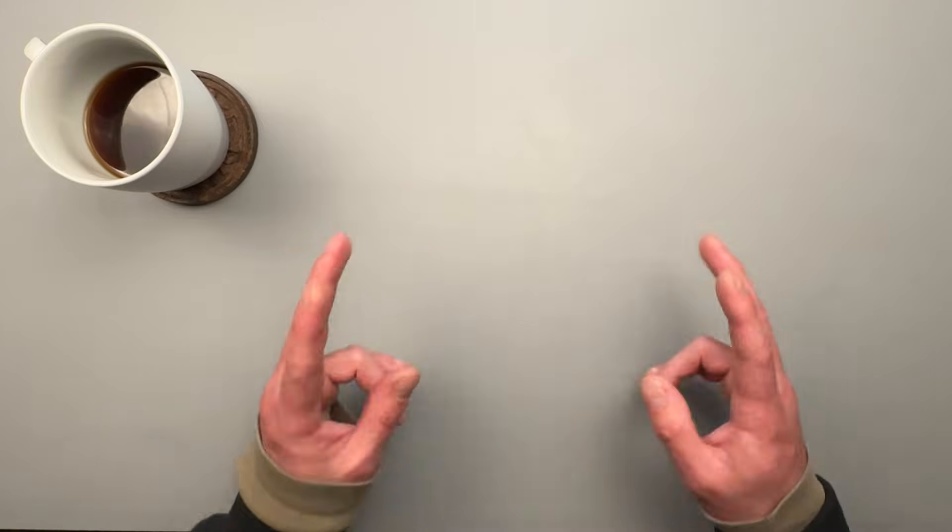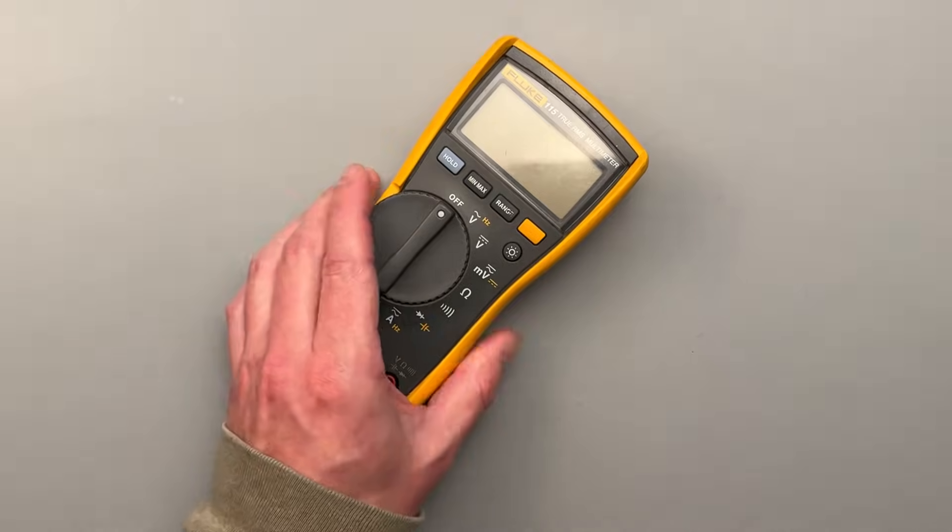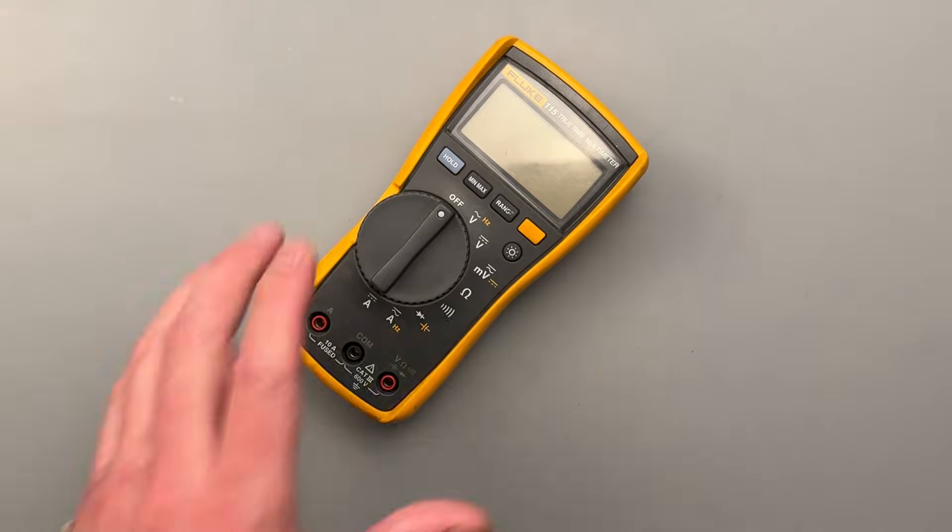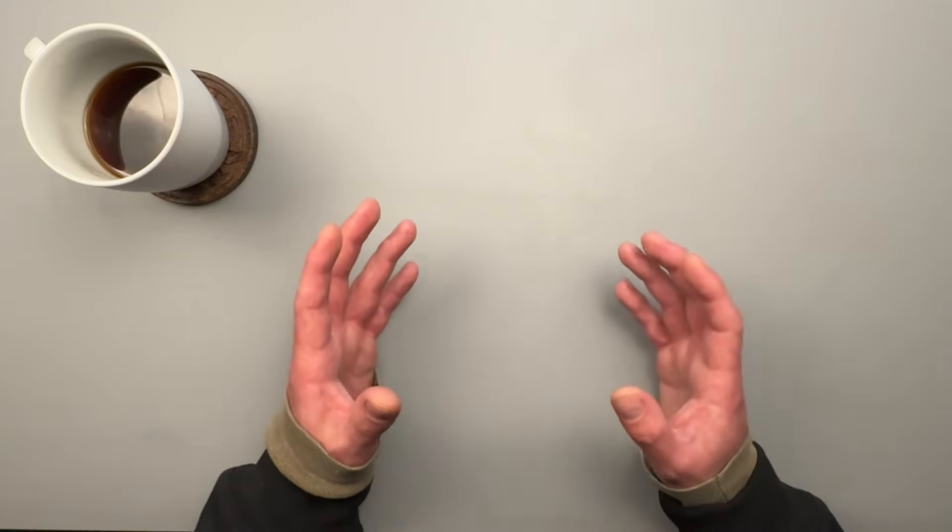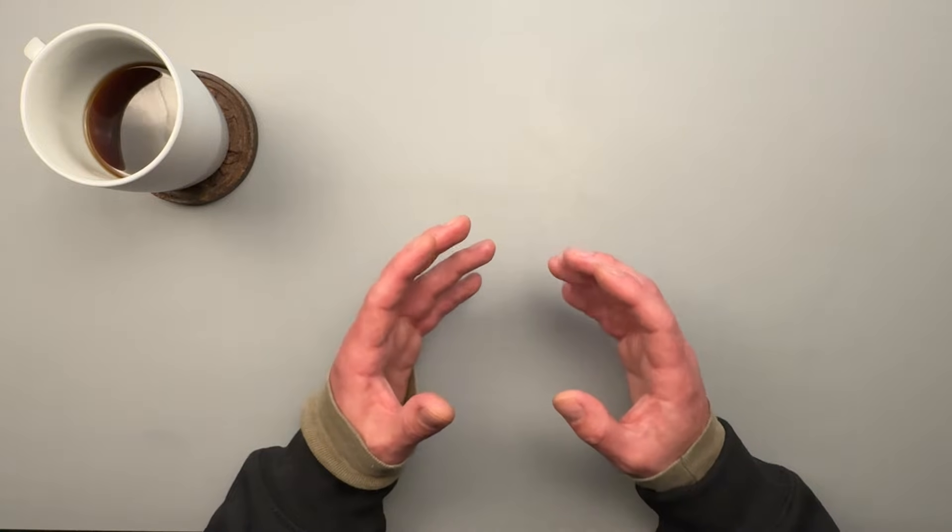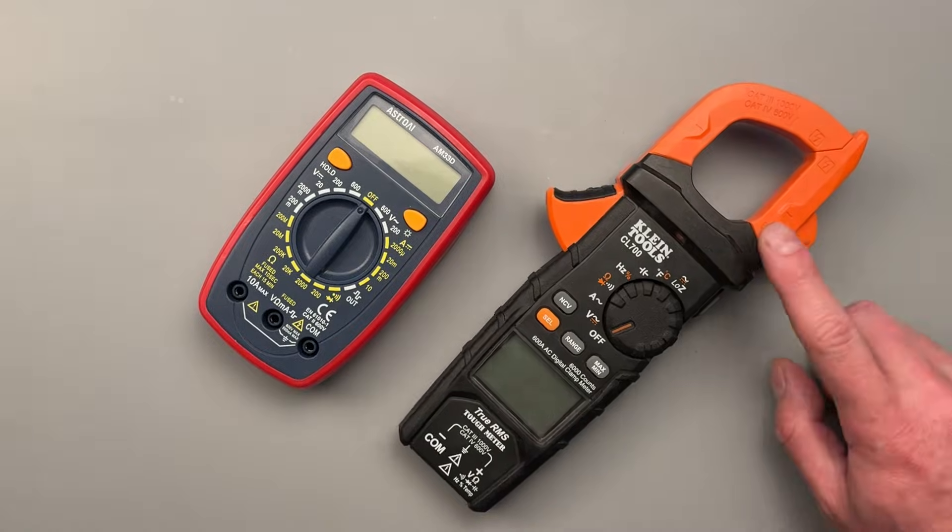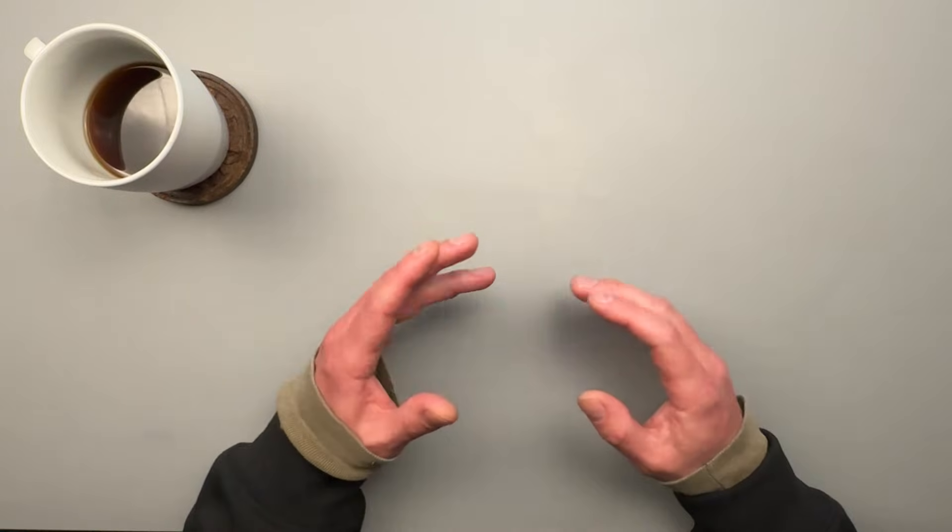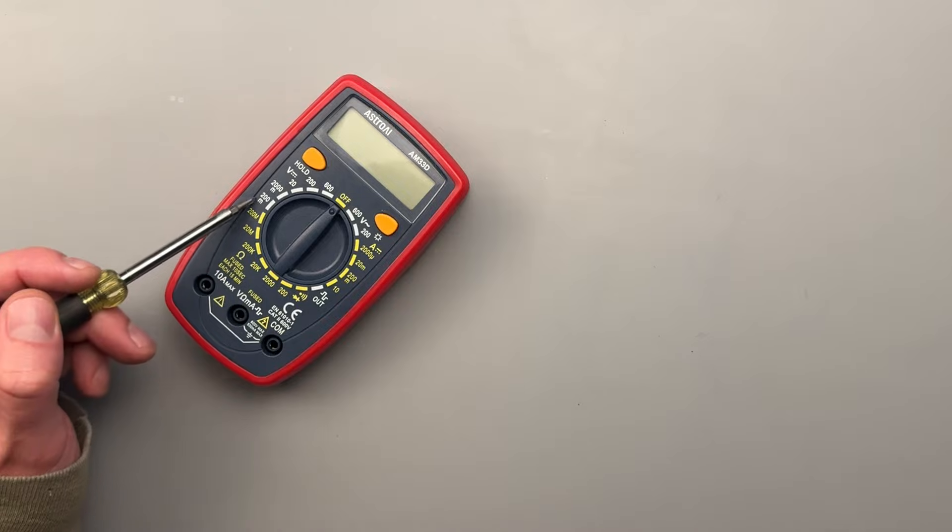There are two main categories of multimeters: digital and analog. This video will focus solely on digital multimeters as they have the largest selection and versatility available. Within the digital multimeter category, we also have manual and auto-selecting meters. Some may even come with an amperage clamp.